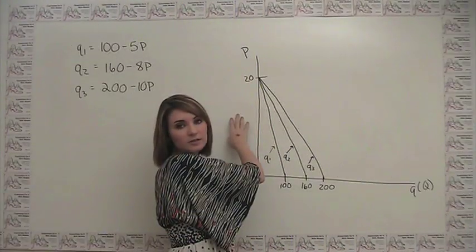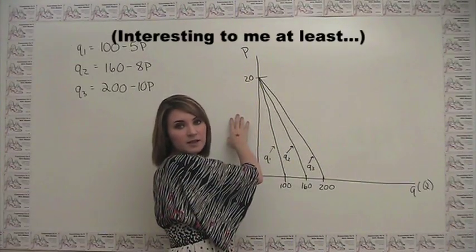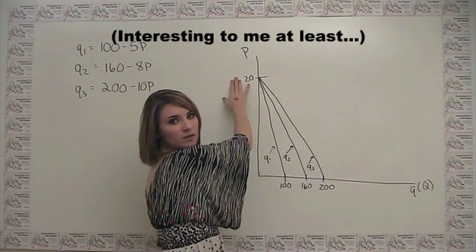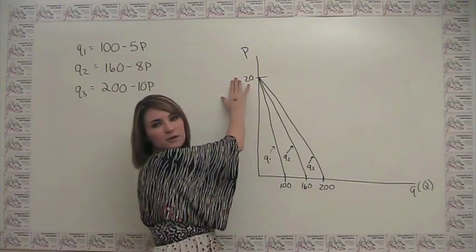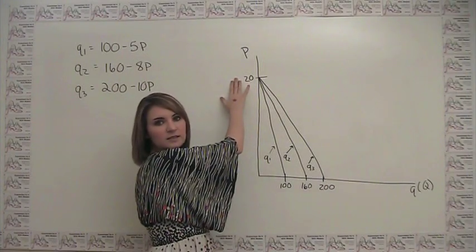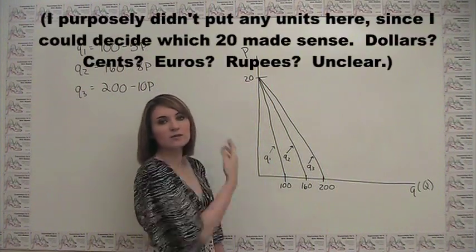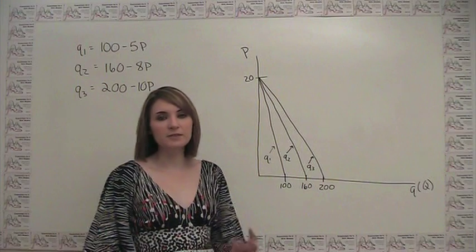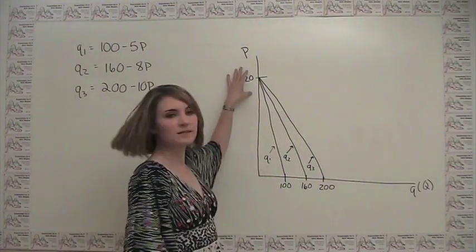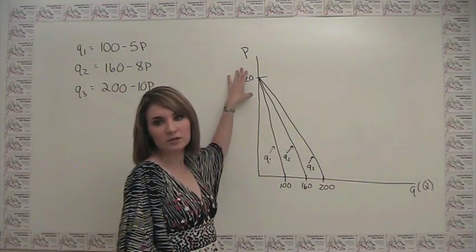These three demand curves share an interesting feature, namely that the maximum willingness to pay for that first unit, or that first tiny little bit of candy, is 20 for each individual. Now, in a lot of cases, this will be different for different people, but we just made this slightly simpler here to illustrate an important point.